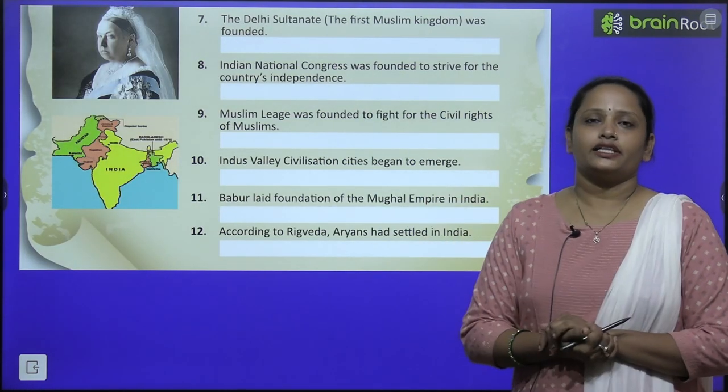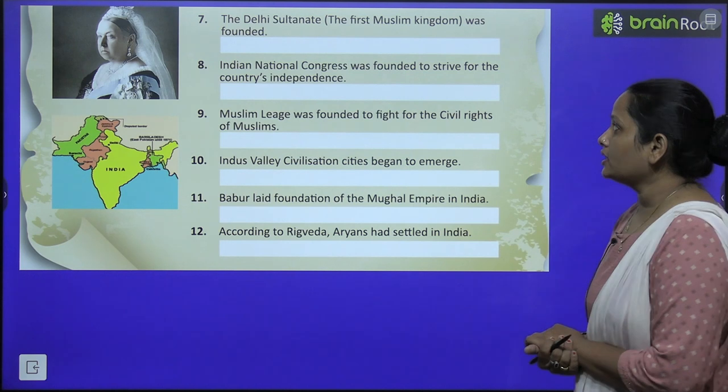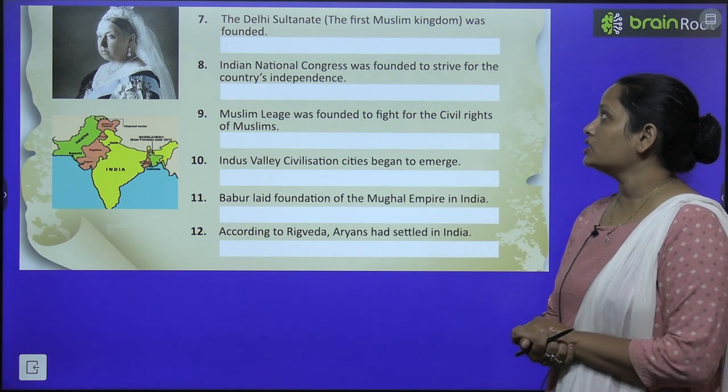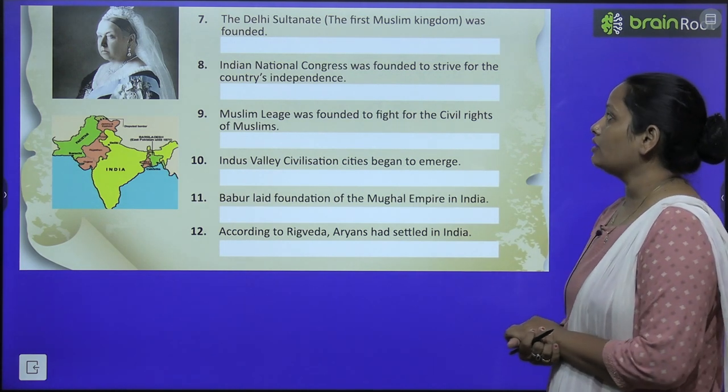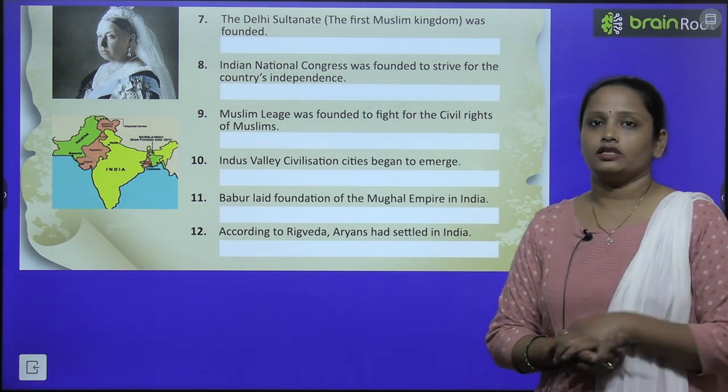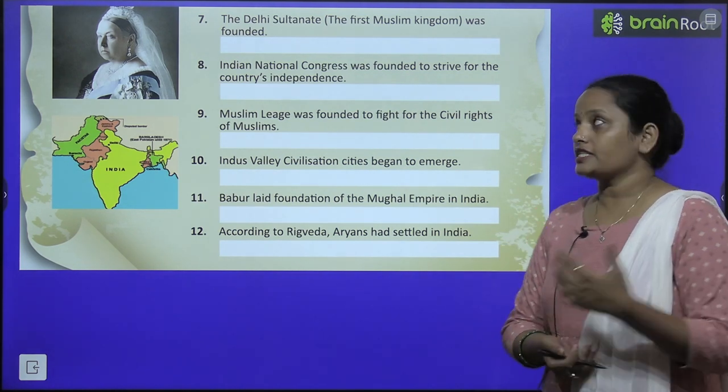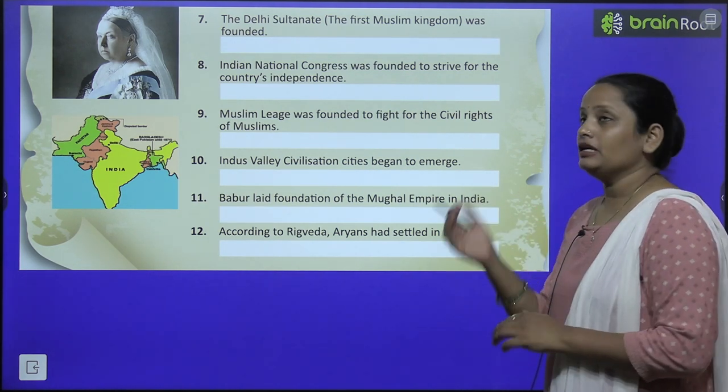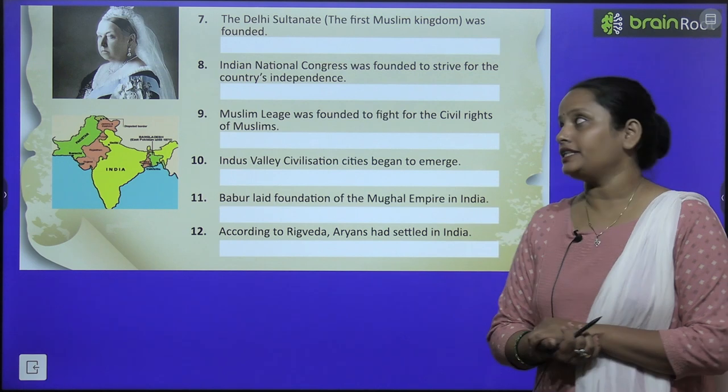Next, the Delhi Sultanate — the first Muslim kingdom — was founded. Delhi Sultanate kab paai gai thi? You have to write the answer.